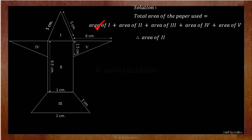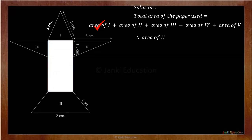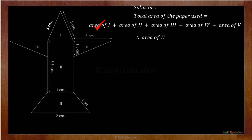Now we will find the area of the second figure. It is very easy to find out that it is a rectangle. So area of 2 is equal to area of rectangle, and the formula for area of rectangle is length multiplied by breadth. Here we have the ready-made measurement. So calculating further, it gives us the answer 6.5 centimetre square. So like this we have found the area of the second figure.